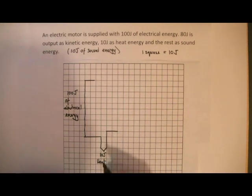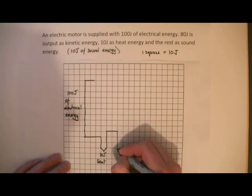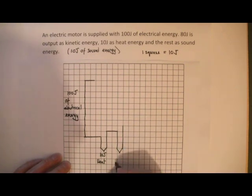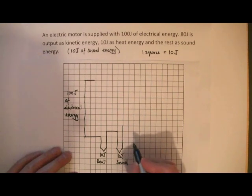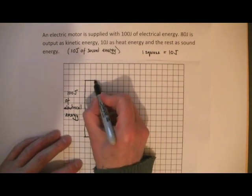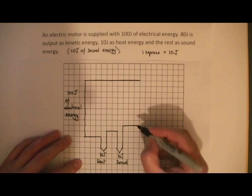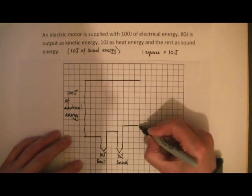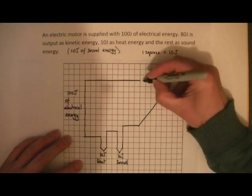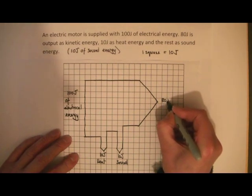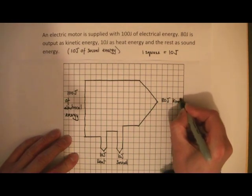That gives me 10 joules of heat energy. Now I need another 10 joules of sound energy, so that's another 1 square wide arrow. That's 10 joules of sound energy. That should leave me with 80 joules, which is 8 squares wide — and that becomes the kinetic energy arrow. So that is 80 joules of kinetic energy.